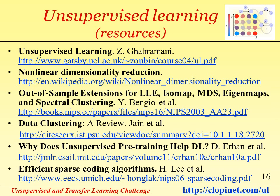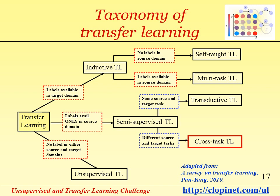Follow these pointers to learn more about unsupervised learning. Let's move on and examine the case of cross-task transfer learning. Cross-task transfer learning arises when labels are available only in a source domain at the time of training, but there are different source and target tasks.